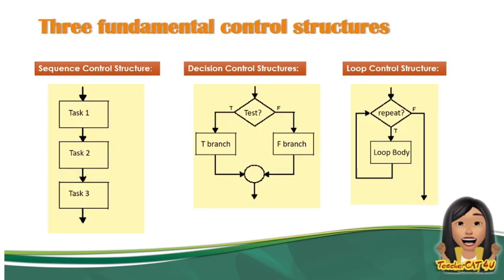Here is a sample flowchart. For the sequence control structure, after Task 1, it moves to Task 2, and after Task 2, it moves to Task 3. For the decision control structure using if-else, it identifies whether a given statement is true or false — if true, it goes one way; if false, another statement follows. For the loop control structure, as long as the given condition is true, the program keeps looping. For example, 'Repeat the process?' — if true, it executes the statement and returns to the start. It only exits when the condition is no longer satisfied.